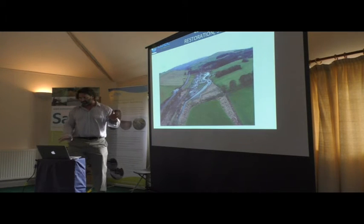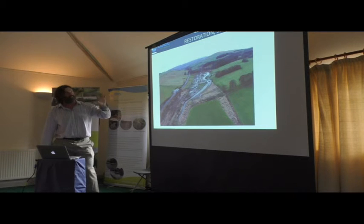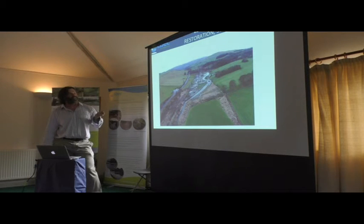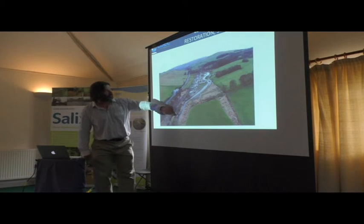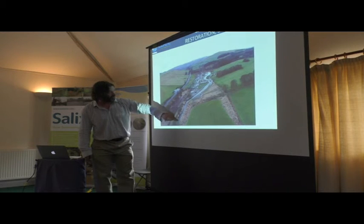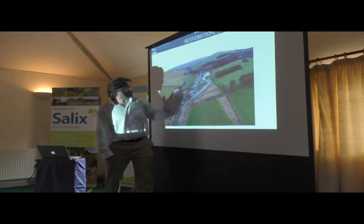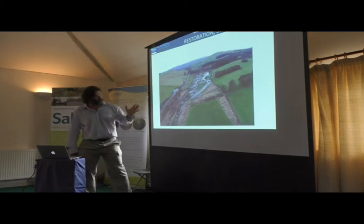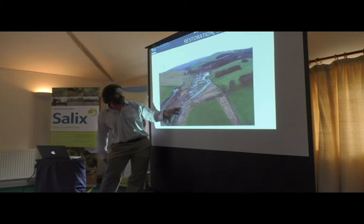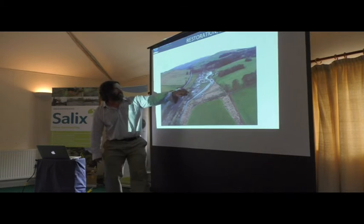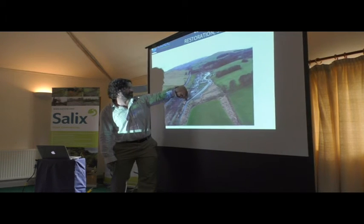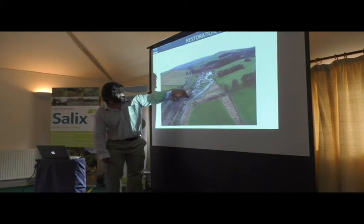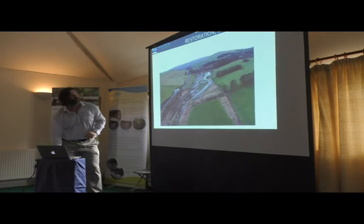Moving on to the other type of restoration — channel stabilisation. This is a project we did with the Tweed Forum on the River Eddleston. There's a very straight channel for about three kilometres. We realigned the channel into a new area to create more diverse habitat. To ensure the river didn't reoccupy the old channel in a flood, we had to protect the banks at both an upstream and a downstream location where the realigned channel rejoins, and we used large wood to protect the banks in both locations.